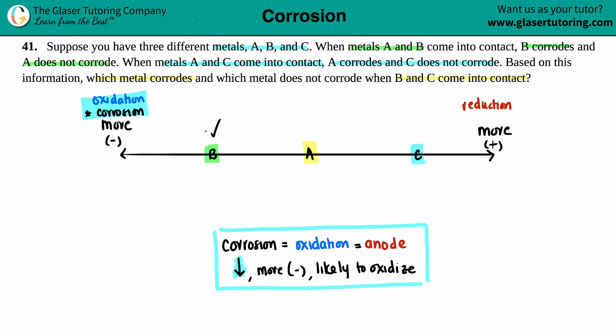B is the most likely, A is in the middle, and C is the least likely to corrode. So now it says, based on this information, what metal corrodes and what metal does not? B and C. So metal B and metal C.